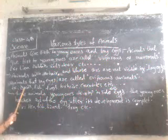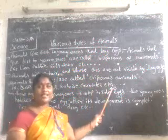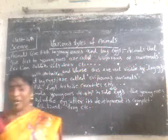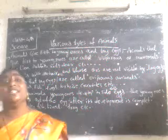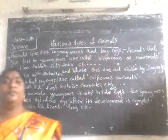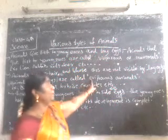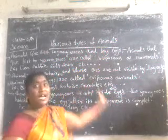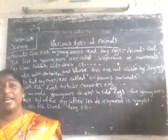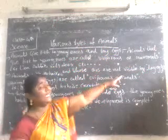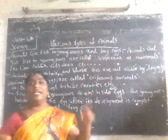Examples of oviparous animals: birds, fish, frogs, tortoise, crocodiles, etc. These animals — we cannot identify the ears on their body. Those animals are called oviparous animals. Those animals give birth to young ones by laying eggs — by laying eggs.